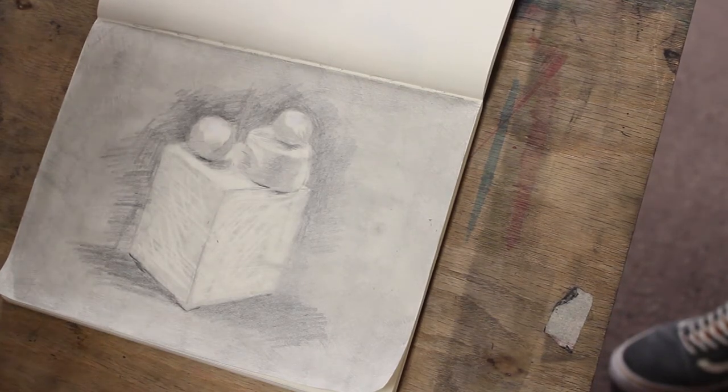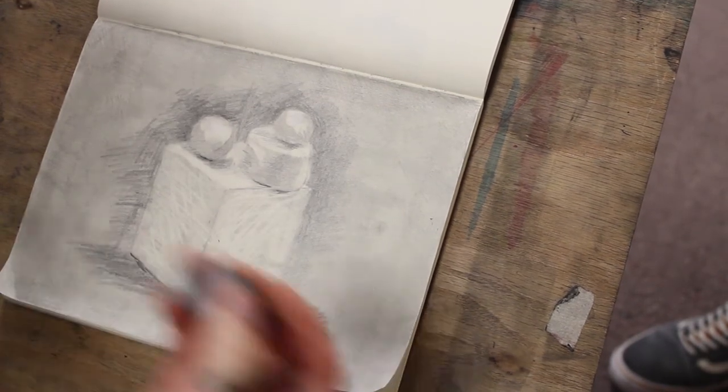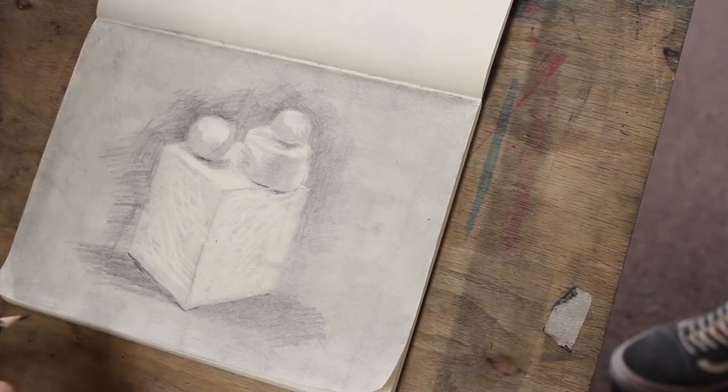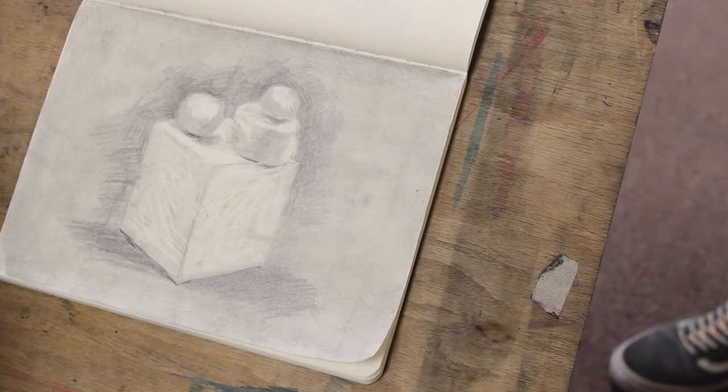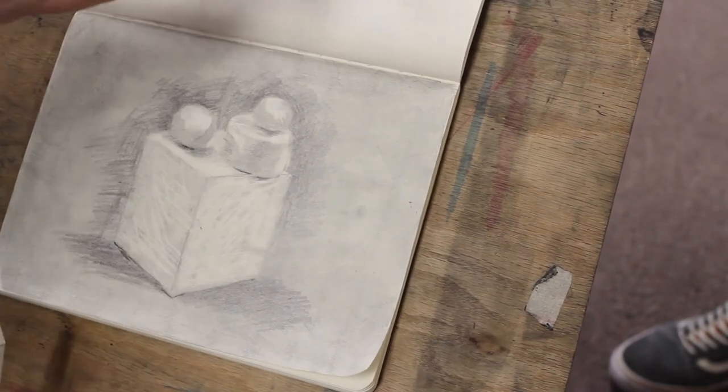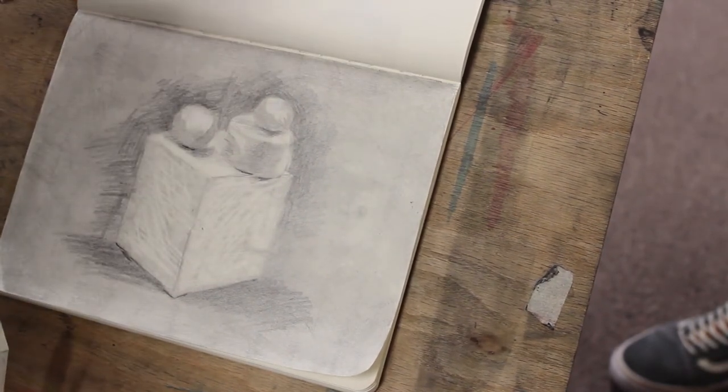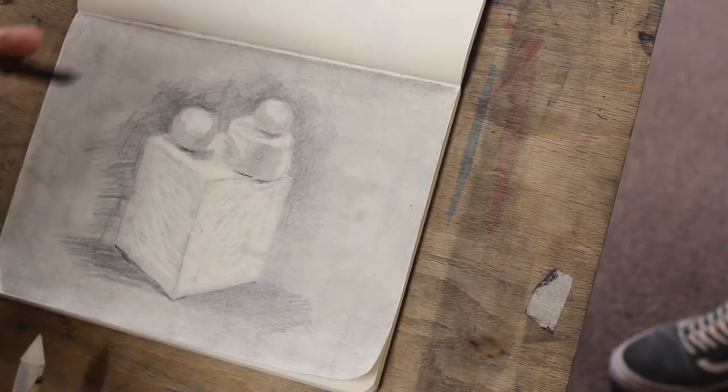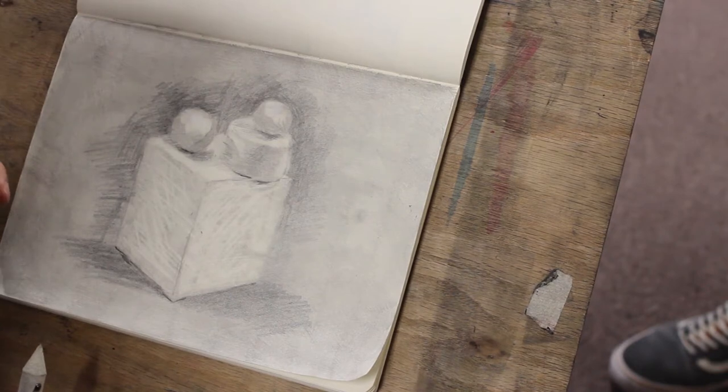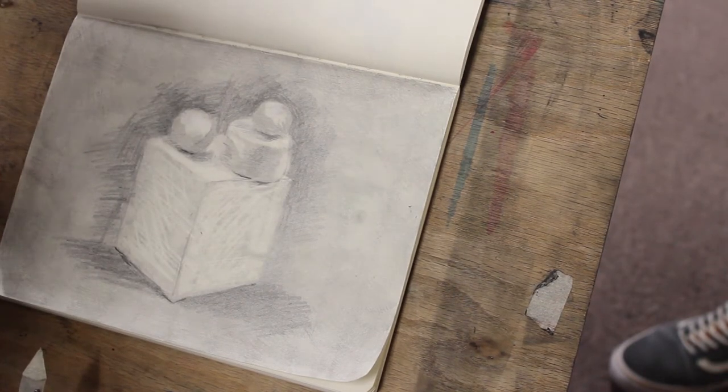And you can do this with any objects, people, whatever. A lot of my life drawings start like this. And if you use toned paper, paper that's already gray, you can use your black and white charcoal or whatever like this. And you can draw your light in with your white and your dark in with your black. So good middle gray paper is awesome too.